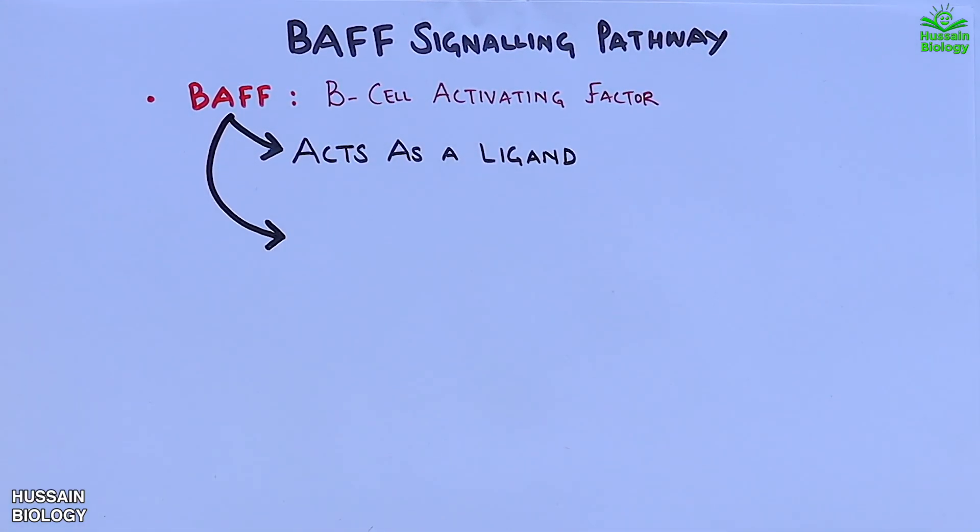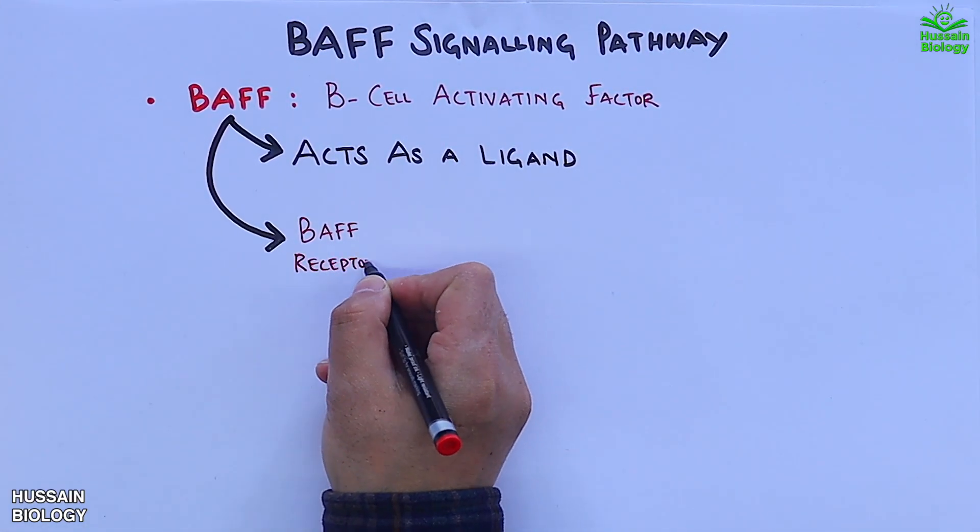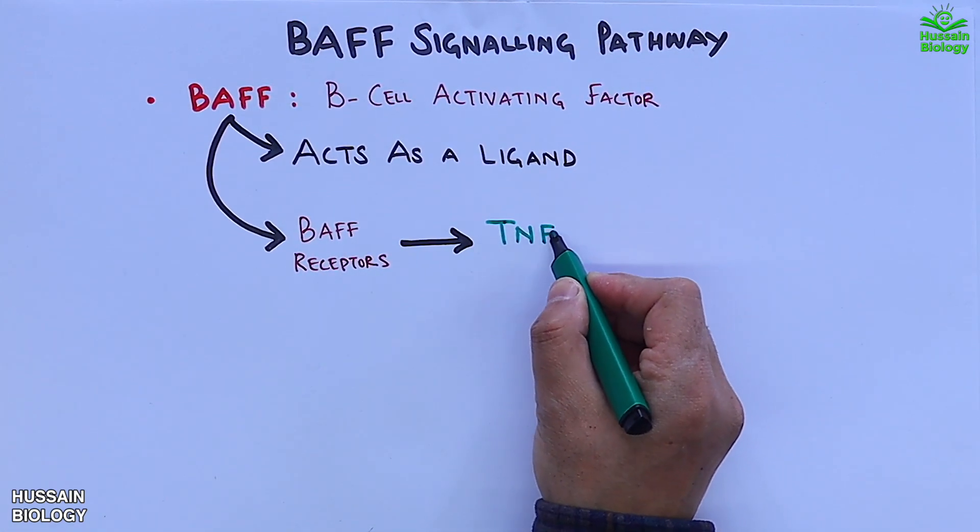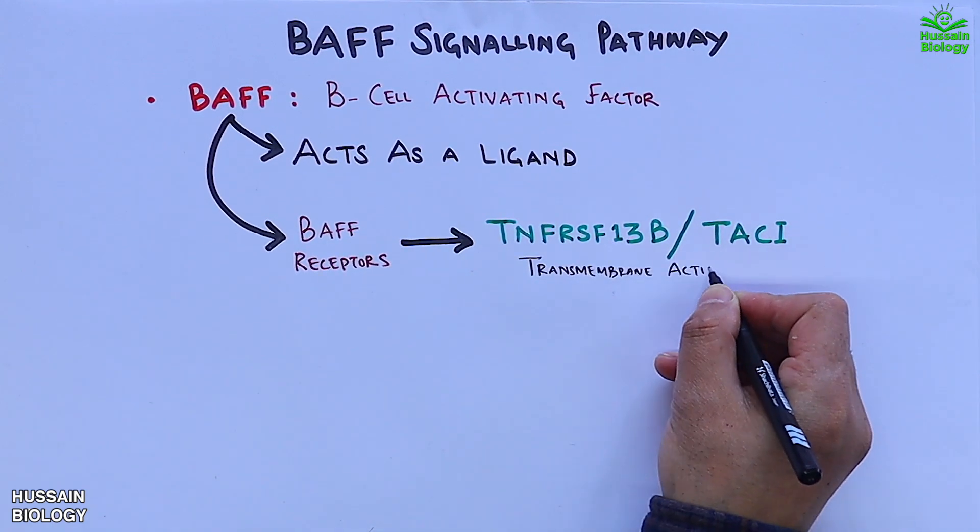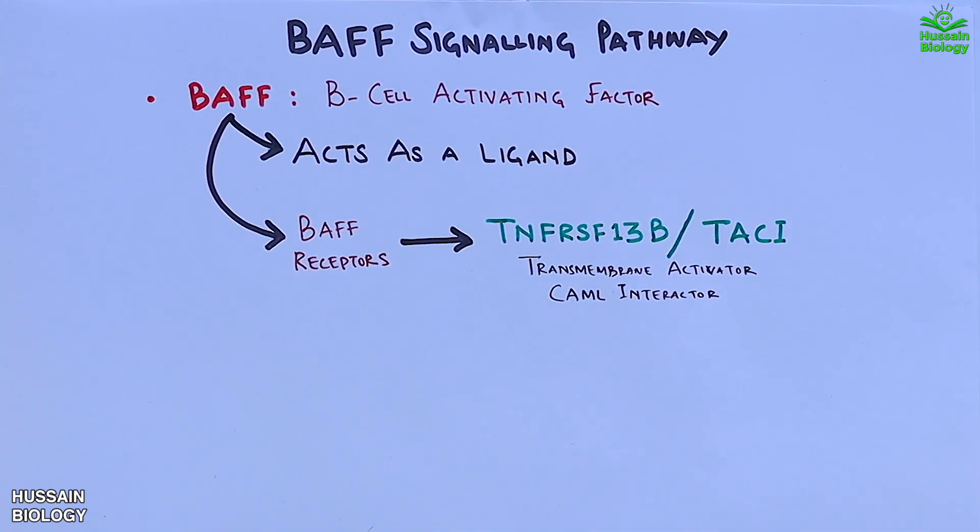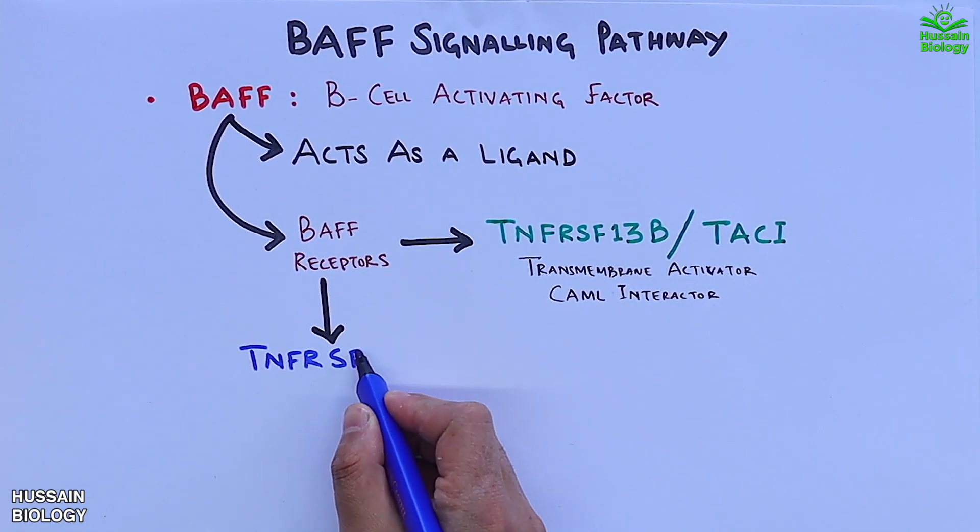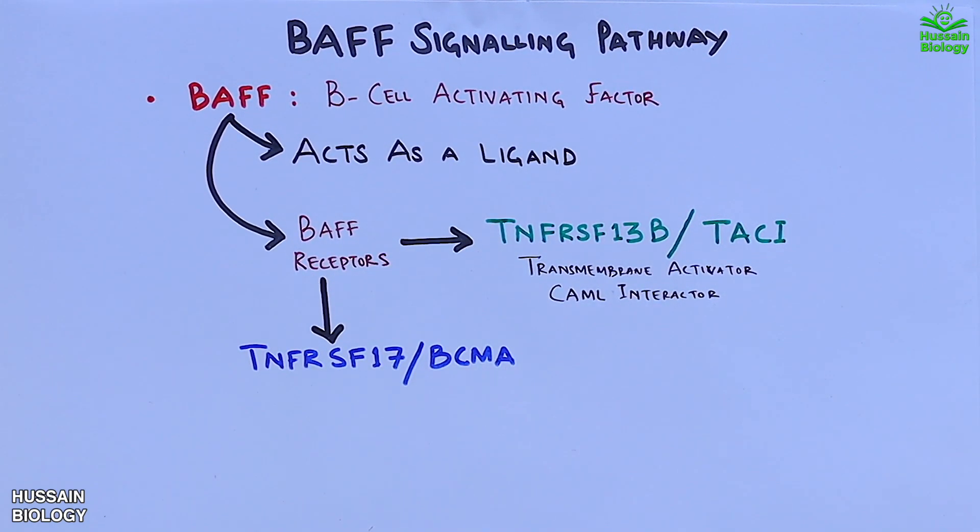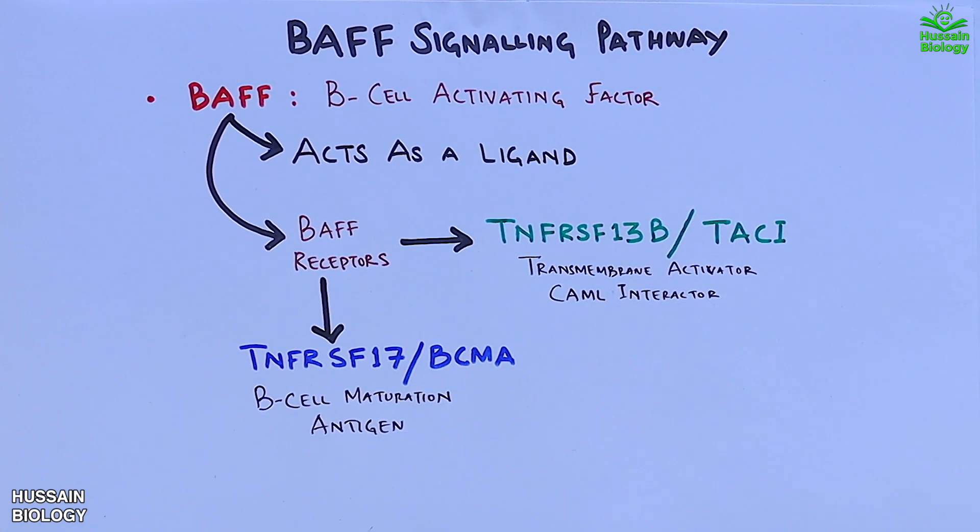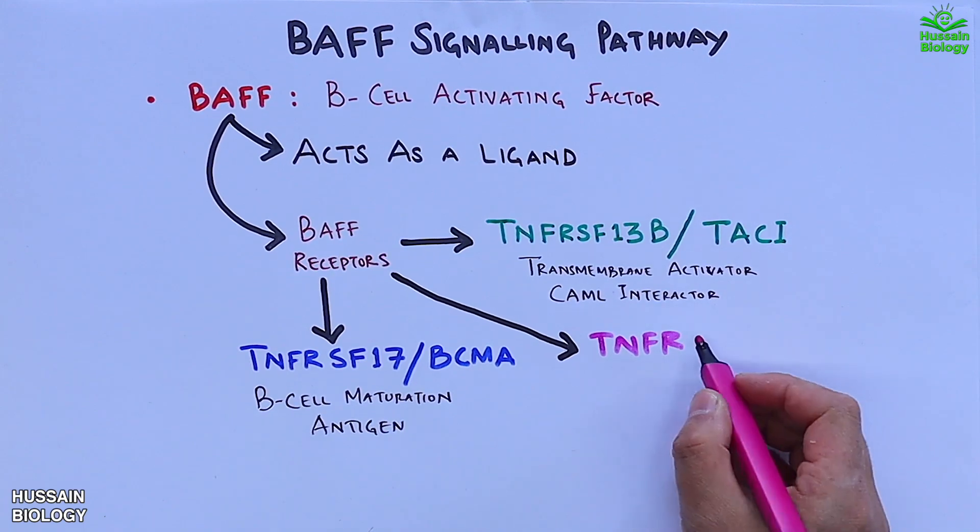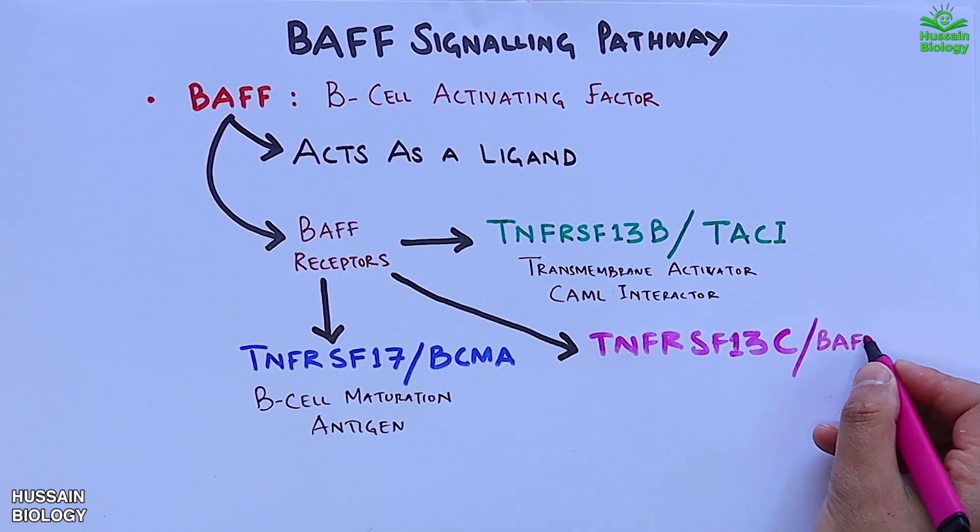For this ligand we have BAFF receptors like TNFRSF13B or TACI, which stands for Transmembrane Activator CAML Interactor. The second receptor is TNFRSF17 or BCMA, which stands for B cell maturation antigen. And the third one is TNFRSF13C or BAFFR.